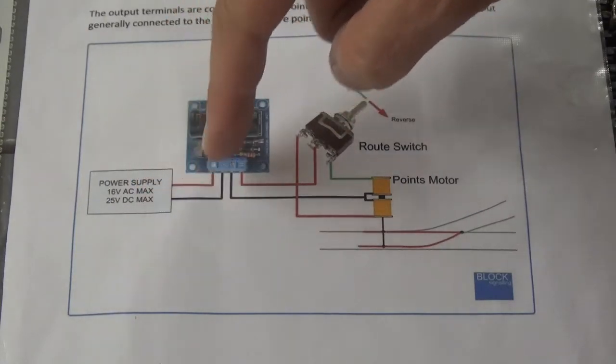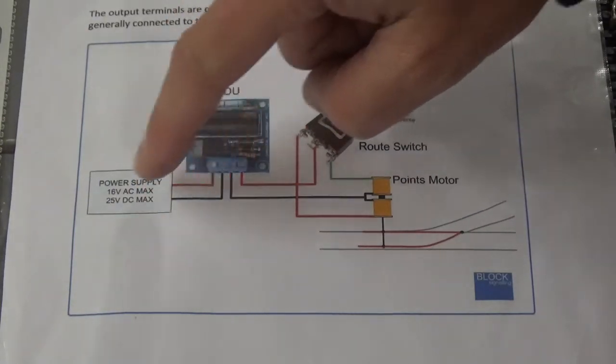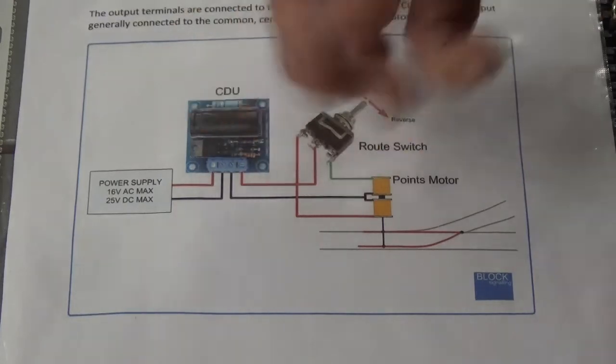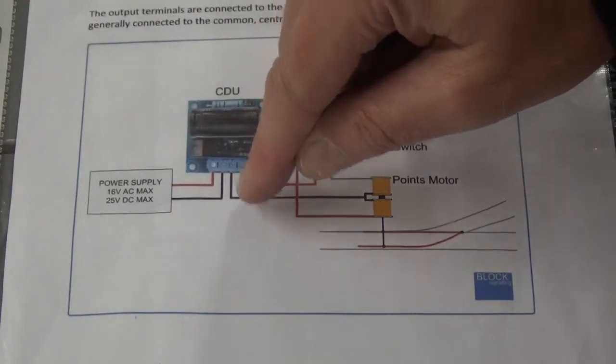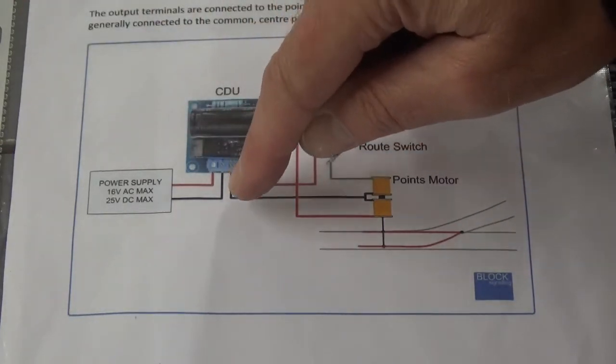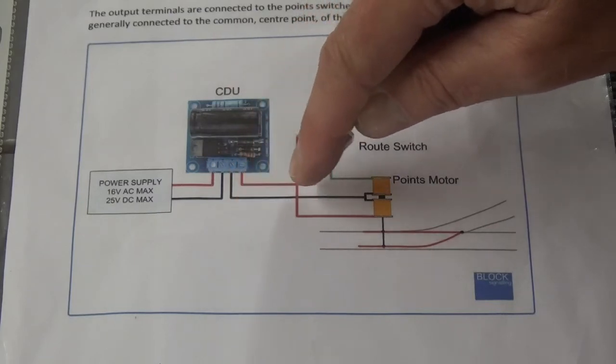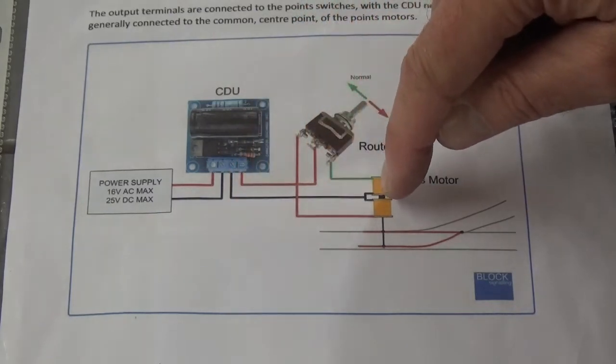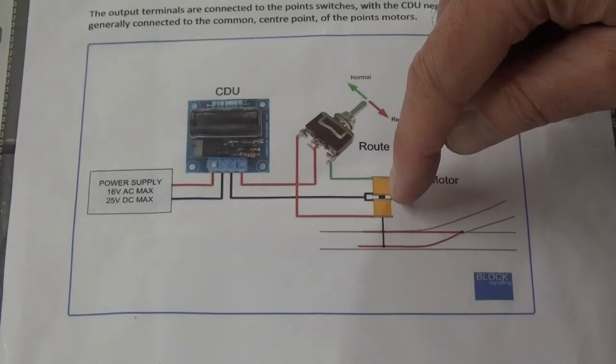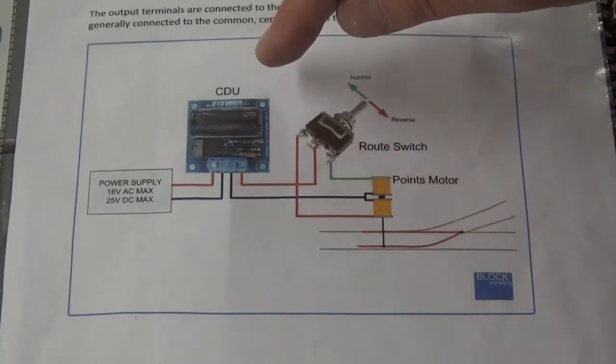That just goes into that side of the CDU, quite simple. Then coming out of the CDU, you have a black wire in this case going to the central part of the point motor.